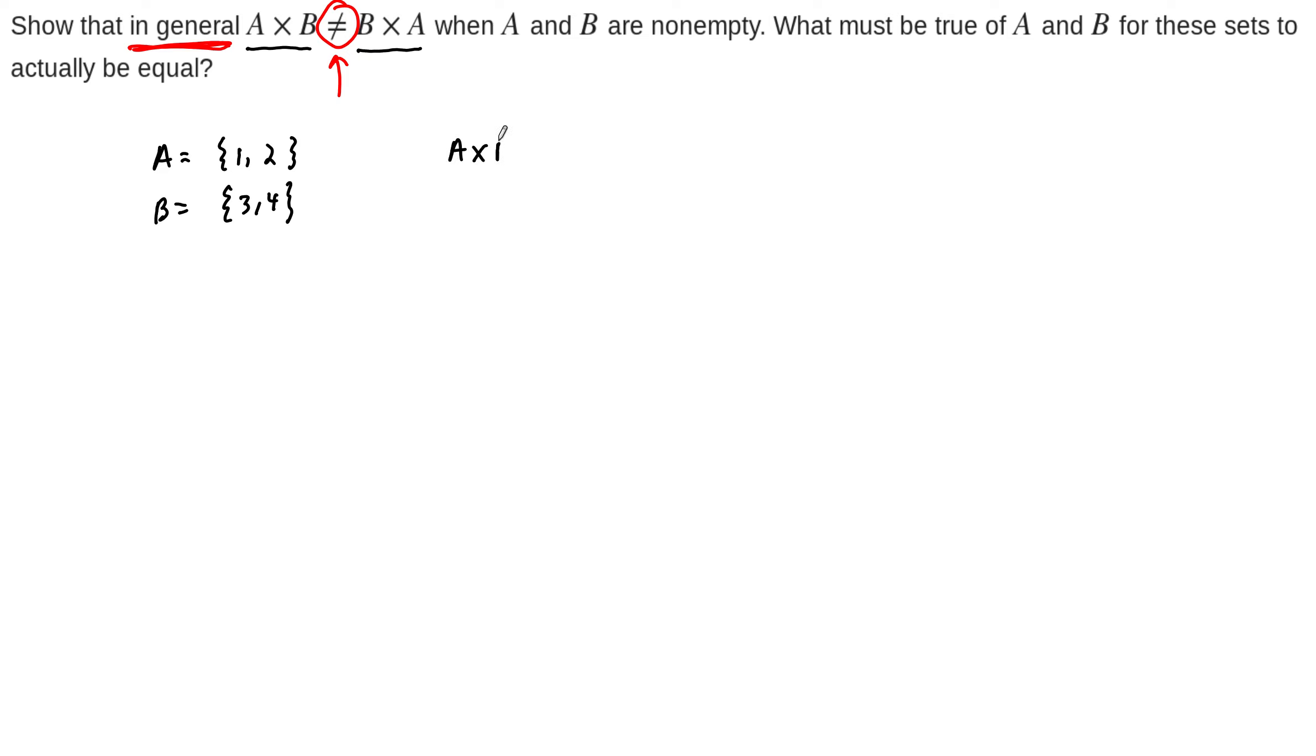So A cross B, remember, this is the set of all ordered pairs which take elements of A and then elements of B, and it has to be in that order. So (1,3) is an element, (1,4) is an element, (2,3) is an element, and (2,4) is an element. And those are the only elements of A cross B.